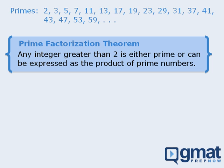For example, 21 can be expressed as 3 times 7, where 3 and 7 are both prime numbers. We call this the prime factorization of 21. Similarly, 60 can be written as 2 times 2 times 3 times 5, where all of the numbers are prime.